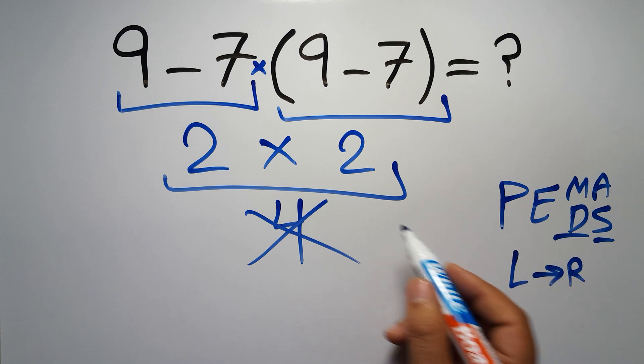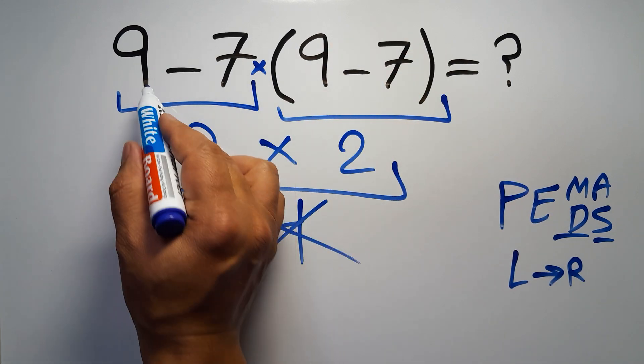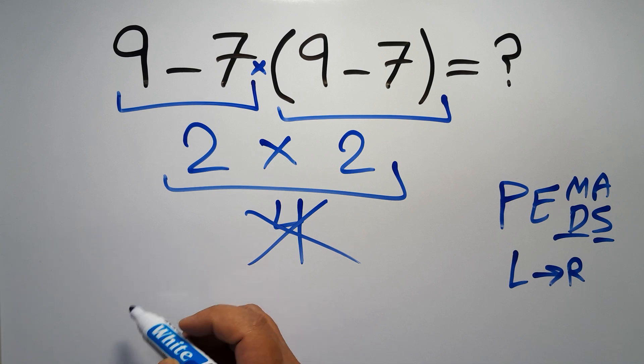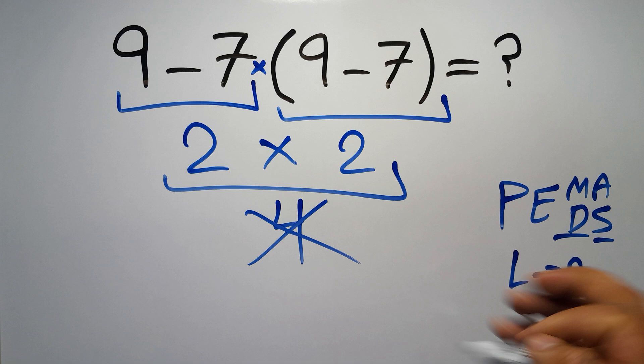So according to the PEMDAS, first we have to do this parentheses, then this multiplication and finally this subtraction. If we do this subtraction before this multiplication or this parentheses it is wrong.